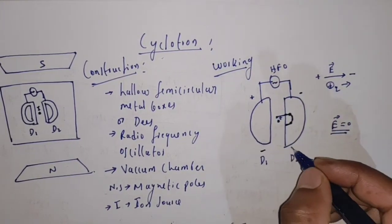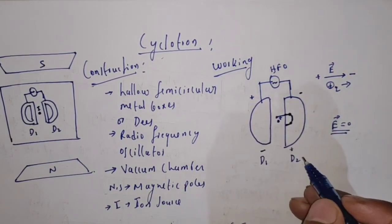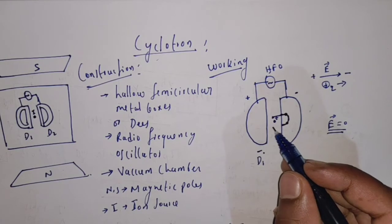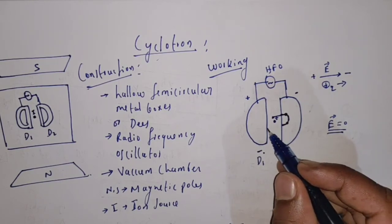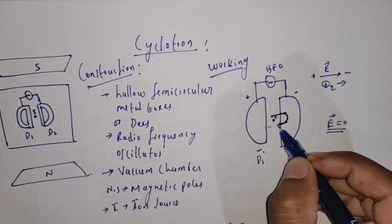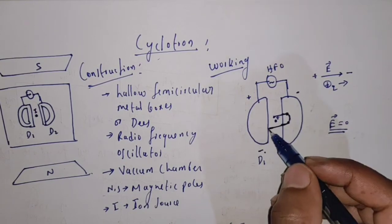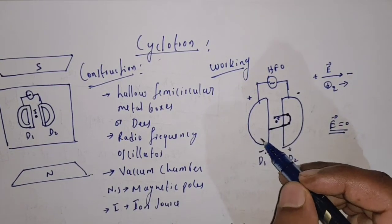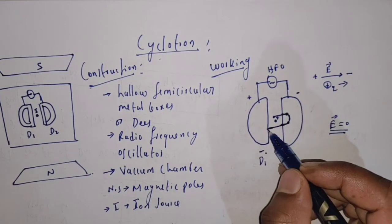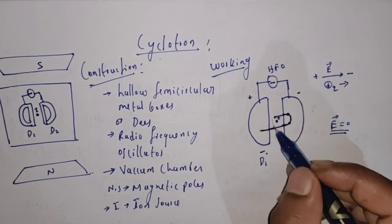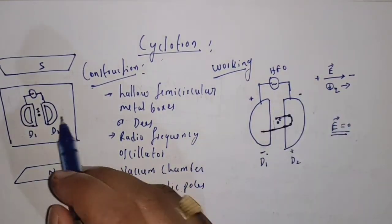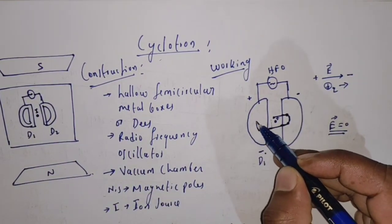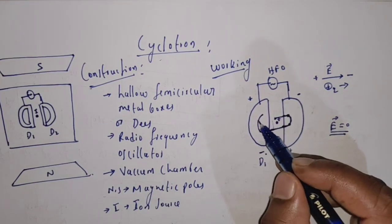When the ion reaches the end of D2, the potential is reversed by the high frequency oscillator — a negative potential is given to D1 and a positive potential is given to D2. The electric field again goes from positive to negative, and the positive ion is accelerated towards D1. Inside D1, since it is a hollow metal box, the electric field is zero and the ion moves with constant velocity.